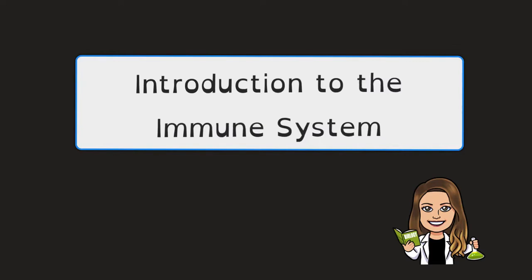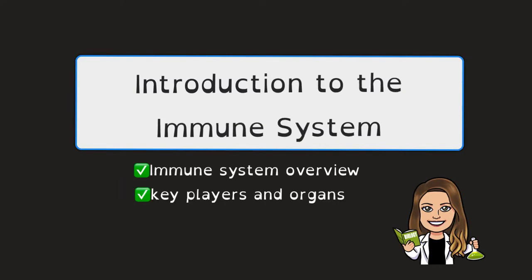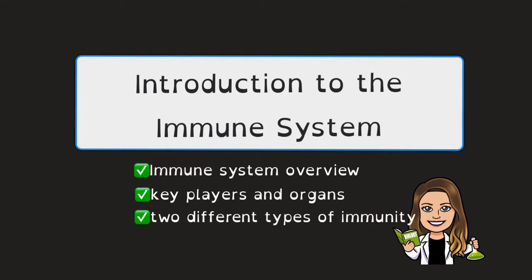The immune system itself is quite complex and involves a bunch of different cells as well as organs that play a role in immunity. In this video, I'm going to take a look at an overview of the immune system, introduce you to some key players and organs as well as two different types of immunity. In future videos, I will delve in deeper to specific topics because again, the immune system is quite complex.